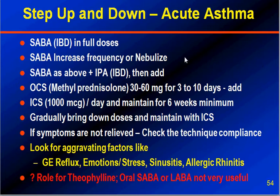This is called the step-up and step-down treatment. For acute asthma, the first step would be a short-acting bronchodilator — short-acting beta-agonist (SABA) in full dose, like salbutamol, terbutaline, or levosalbutamol. If symptoms are not controlled, increase the frequency of the short-acting bronchodilator or use nebulization. If the acute asthma is still not controlled, add SABA as above plus inhaled ipratropium bromide as an add-on drug.